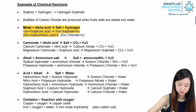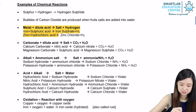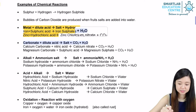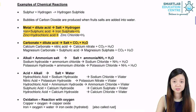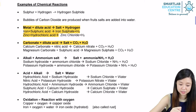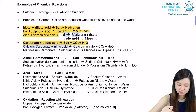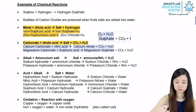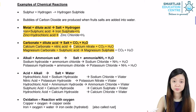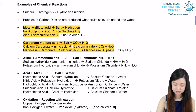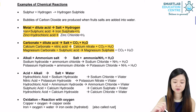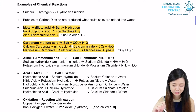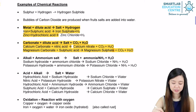The second general equation to memorize is: carbonate plus acid will give you salt plus carbon dioxide plus water. An example is calcium carbonate plus nitric acid, which gives calcium nitrate plus carbon dioxide plus water — calcium nitrate being the salt formed. Another example: magnesium carbonate plus sulfuric acid gives magnesium sulfate plus carbon dioxide plus water. Magnesium sulfate is the salt formed.